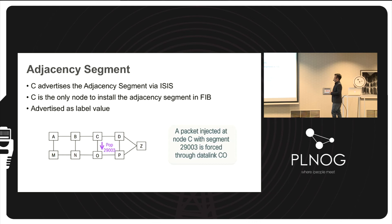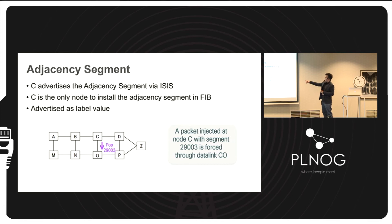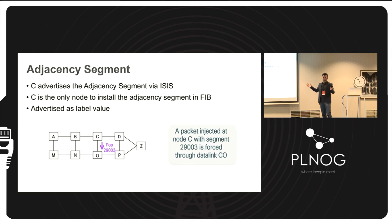The adjacency segment is advertised via ISIS or OSPF, but only the generating device — for example C — installs the adjacency segment in its FIB, since it is only locally significant. Even if distributed via IGP, all other devices ignore it.